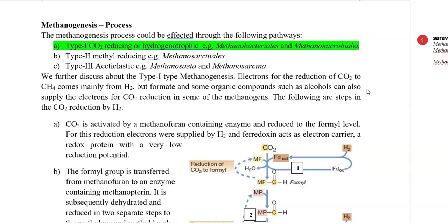Here, methanogenesis could be effected through three different mechanisms. One is Type 1, that is carbon dioxide reducing or hydrogenotrophic group of organism. This is the one which happens predominantly in the earth system.